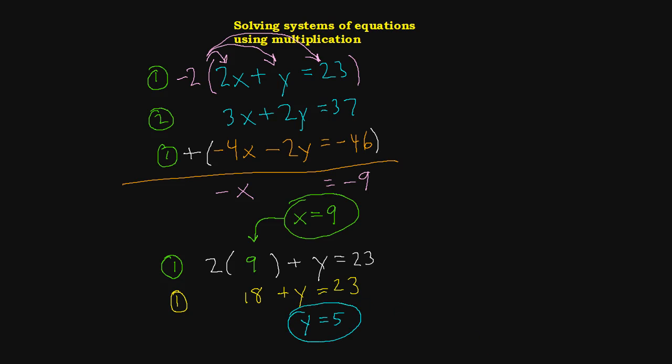And then we take all of that and we write the final result, which is going to be 9, 5, in other words x, y, and we box it. And this is our solution to our system of equations.